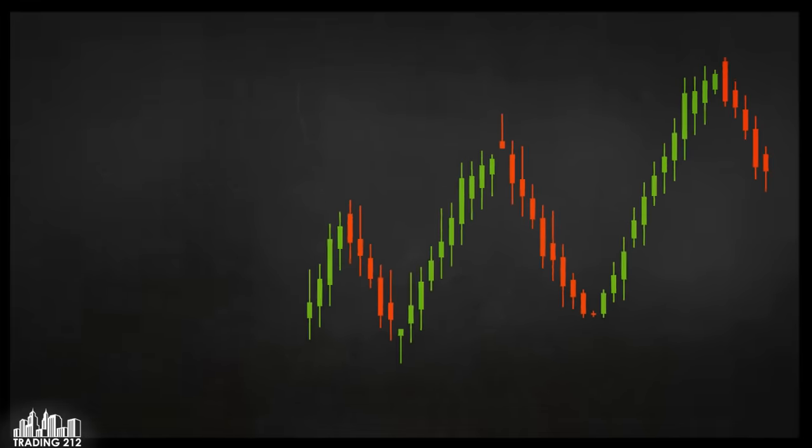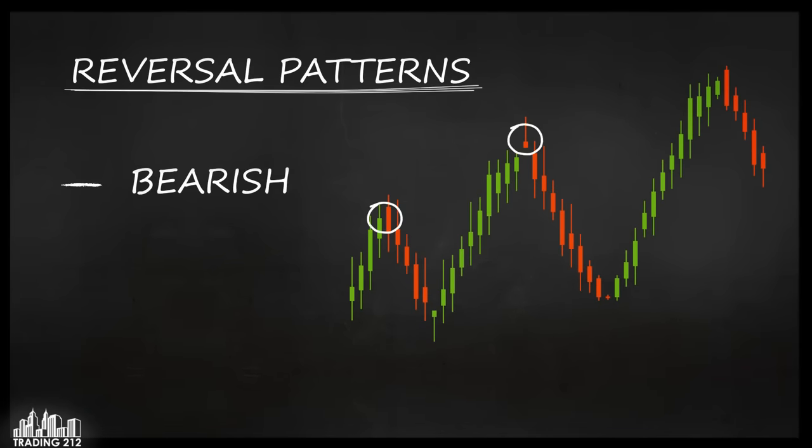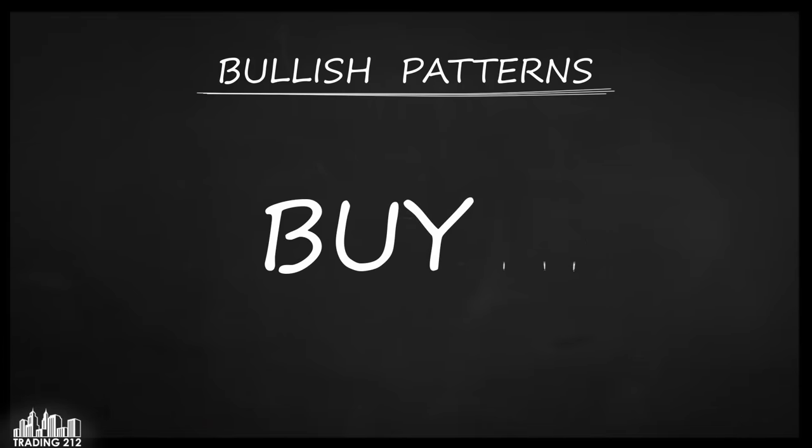Patterns that show that the market could change direction are called reversal patterns. They could be bearish, ones that indicate the change from an uptrend to a downtrend that should be perceived as a signal to sell. Or bullish, these show that a price that has been decreasing is likely to start going up and we should buy. Let's see the most popular candlestick patterns which encourage you to buy.